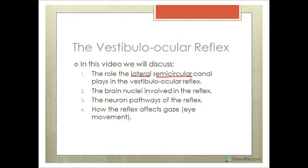We're going to look at all the various nuclei in the brain. Remember a nucleus is a collection of neuron cell bodies in the CNS. Then we're going to look at the neurons and how they go and we're going to look at how this overall affects our gaze, how our eyes will move as a result of the lateral semicircular duct movement itself. So the head moves, the eyeballs move to keep it steady.